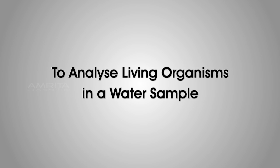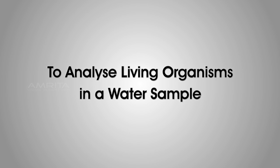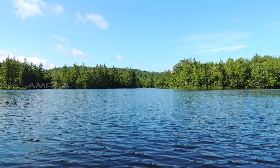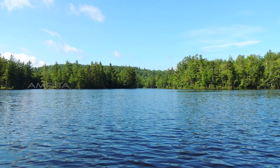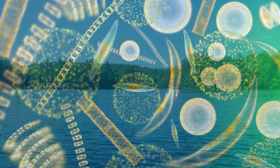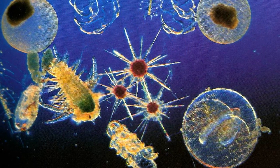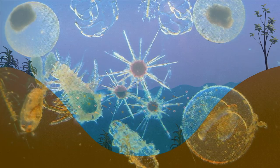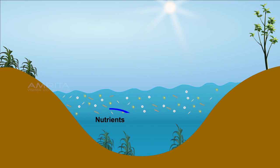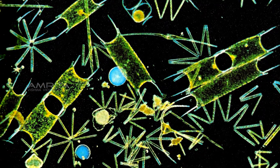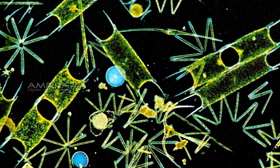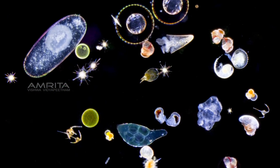To analyze living organisms in a water sample. A productive water body has high nutrient concentrations and has a very high density of phytoplankton per unit area. These water bodies have high amounts of nutrients and dissolved oxygen and bear a large number of organisms at different trophic levels. You will observe these kinds of living organisms in the water sample with the help of a microscope.